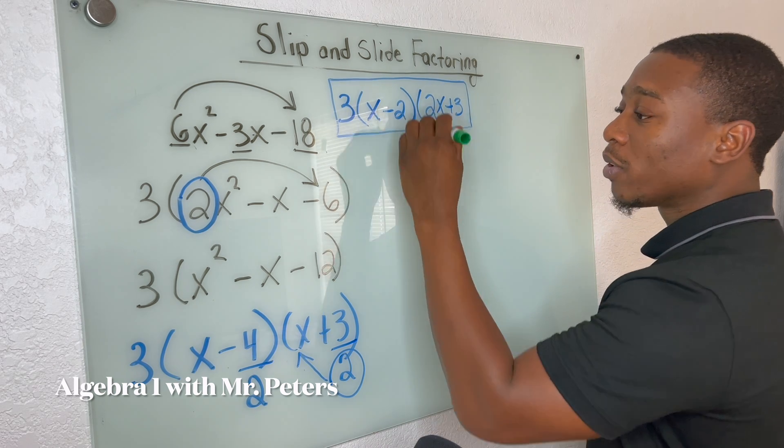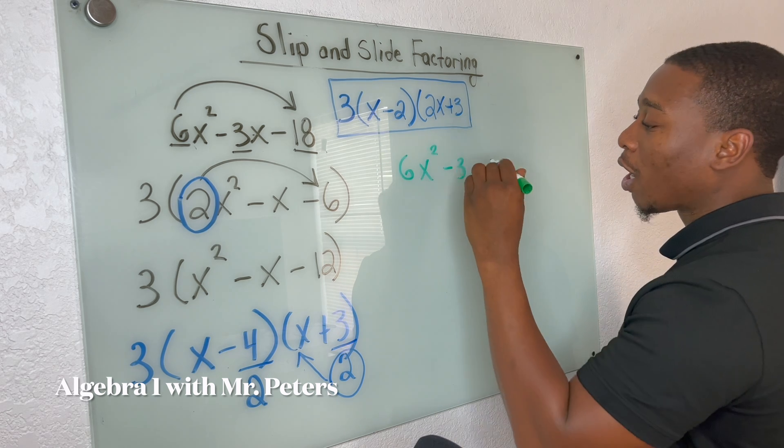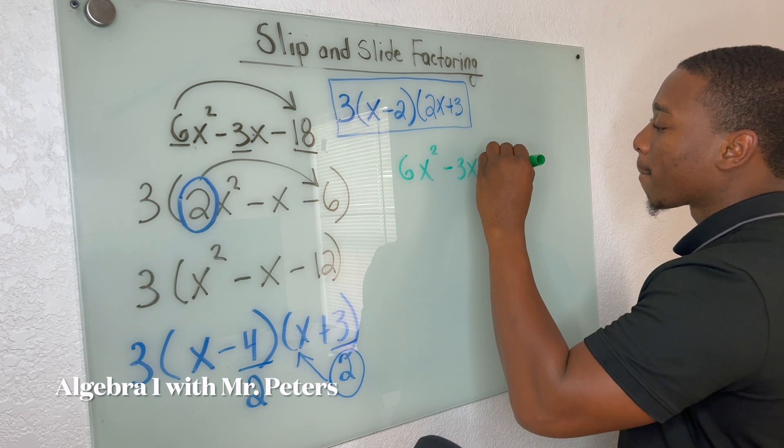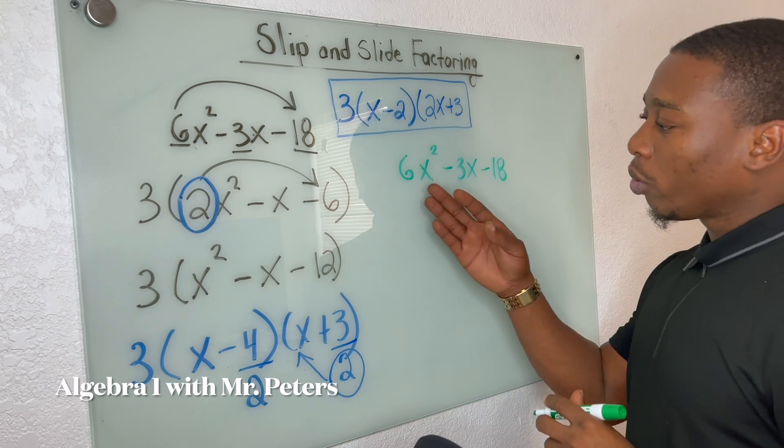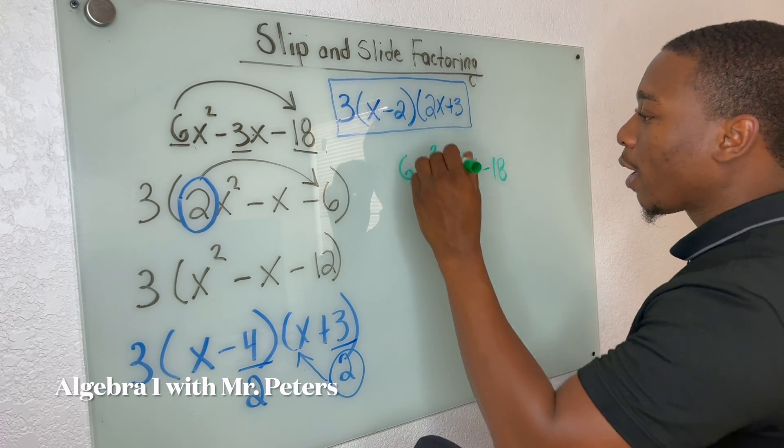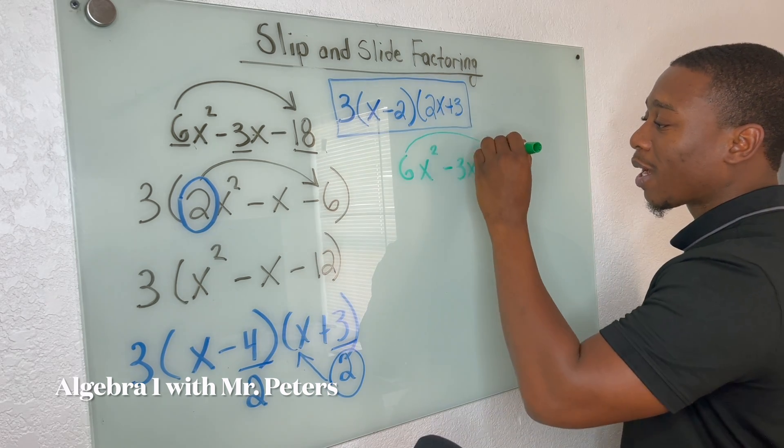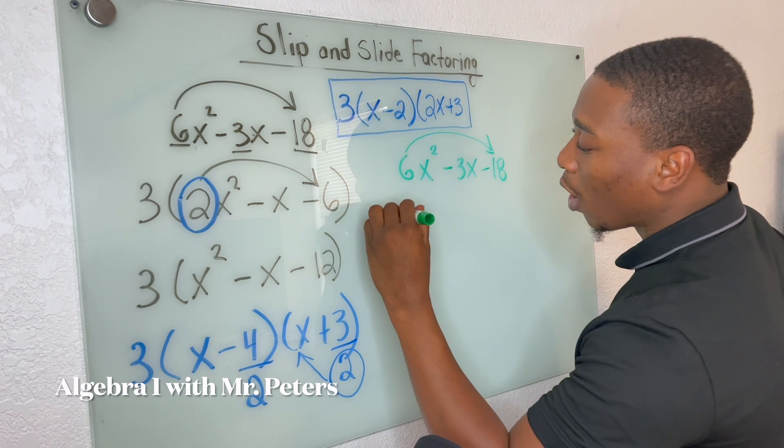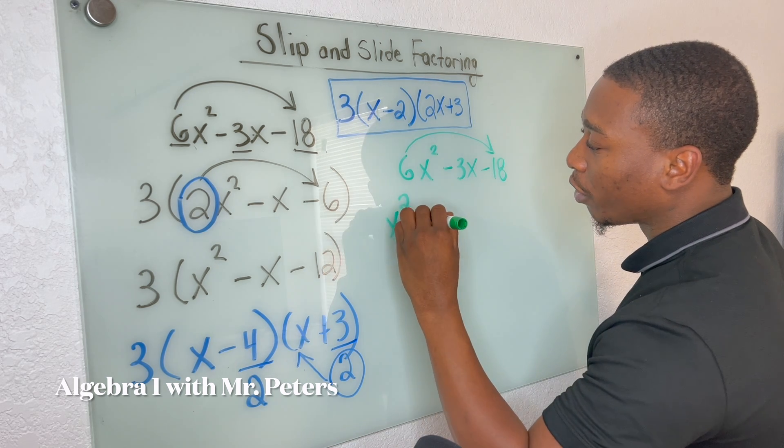So let's rewrite the problem. And I'm going to keep this up there so that we can see how this all works. OK. So what we're going to do, we're going to now just go straight into the slip and slide and multiply.